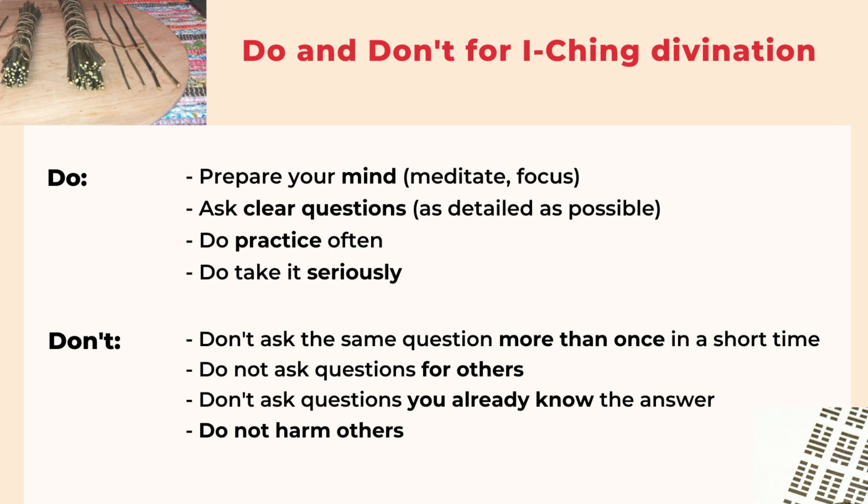The second don't is don't ask questions for other people. If you are not the person who really wants to know the answer, it's very difficult to get a helpful answer. The third don't is don't ask questions that you already know the answer to, because you're not taking it seriously — it's more like a game — and with that attitude you won't get a helpful answer either. The last don't is do not harm other people or be too greedy or unethical. If you have bad intentions, the reading will not be accurate no matter what method you try.